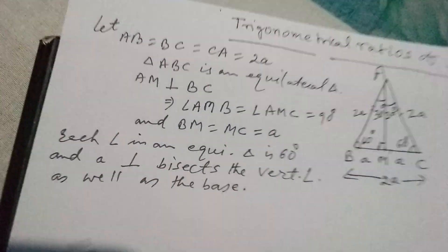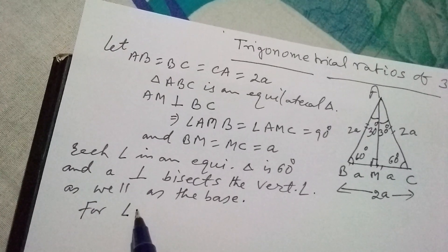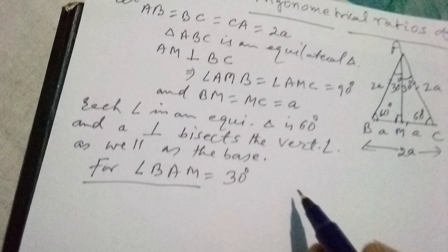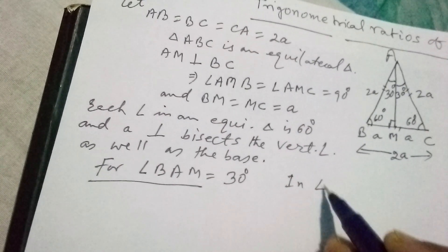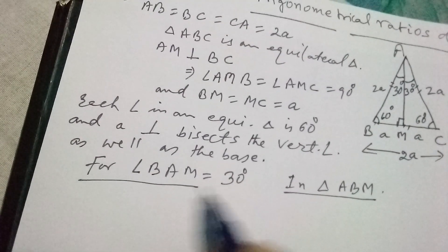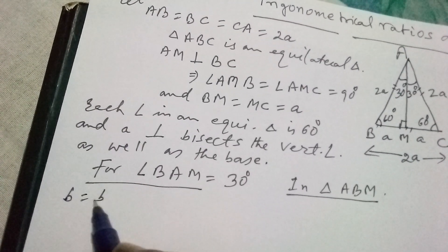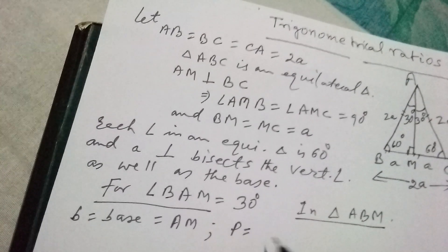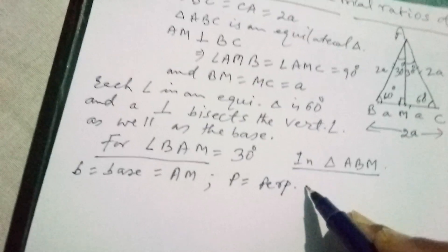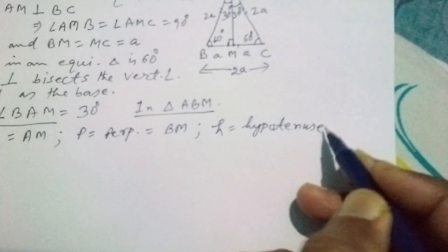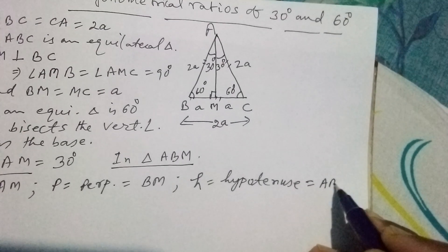For angle BAM which equals 30 degrees, we consider triangle ABM where the acute angle is 30 degrees. For this 30-degree angle, the base (B) equals AM, the perpendicular (P) equals BM, and the hypotenuse (H) equals AB, which is fixed at 2A. The hypotenuse does not change.